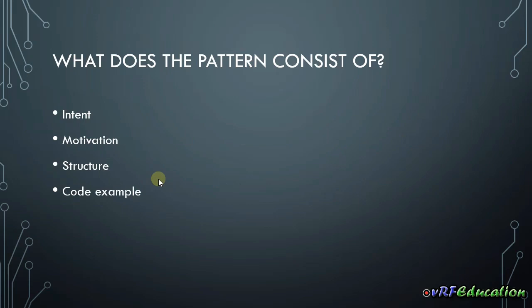Based on this definition, each pattern consists of four different elements. First, the intent of a pattern briefly describes both the problem and solution. Second, motivation further explains the problems and solutions the pattern makes possible. Third, the structure of classes and interfaces shows each part of the pattern and how they are related — this is the most important part. Finally, there may be a code example in a popular programming language to make the idea easier to grasp.